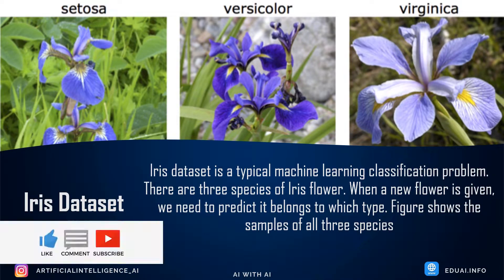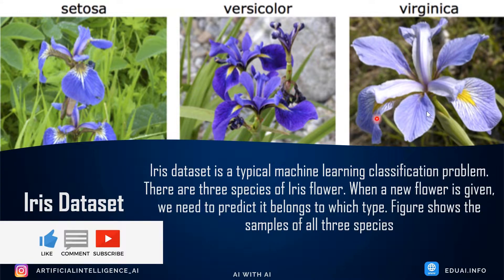Before I jump into the demo, let me give you a brief idea about the iris dataset. We already discussed it in a previous demo on logistic regression, where we used the same dataset. We classified the iris dataset using logistic regression. If you haven't watched that video, I recommend you watch it first. The iris dataset is a typical, very popular machine learning classification problem. There are three species of iris flowers and we need to identify which species a flower falls under — whether it is setosa, versicolor, or virginica.